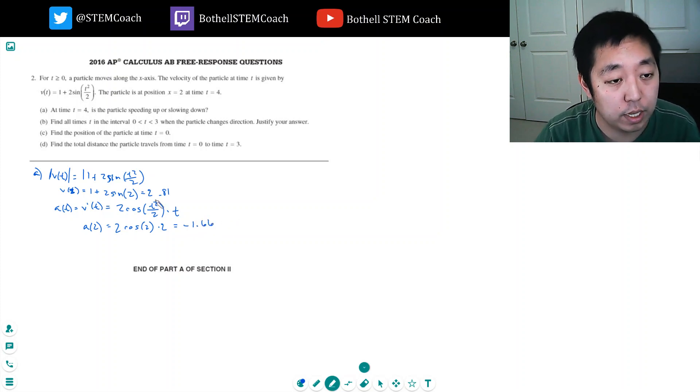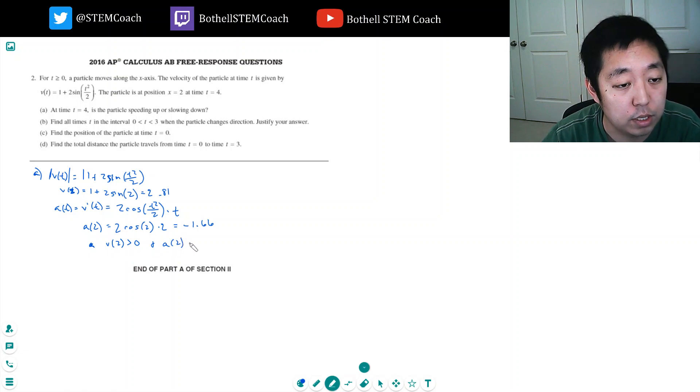So the velocity is at 2.81 and it's decreasing. So because v(2) is greater than 0 and a(2) is less than 0, it is slowing down.